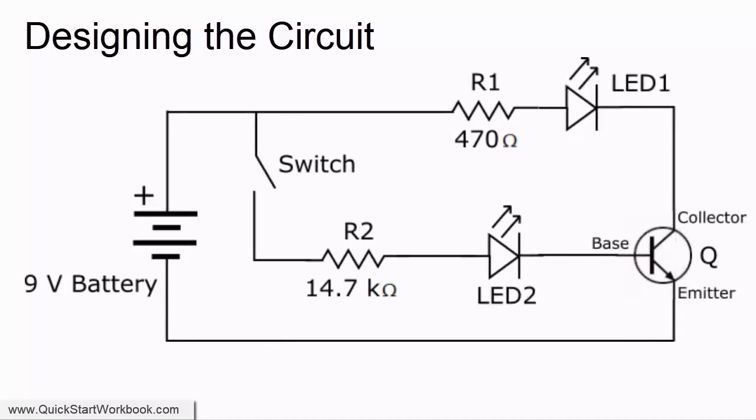The circuit can be easily extended to include a switch, a second resistor R2, a second LED (LED2), and an NPN transistor Q.